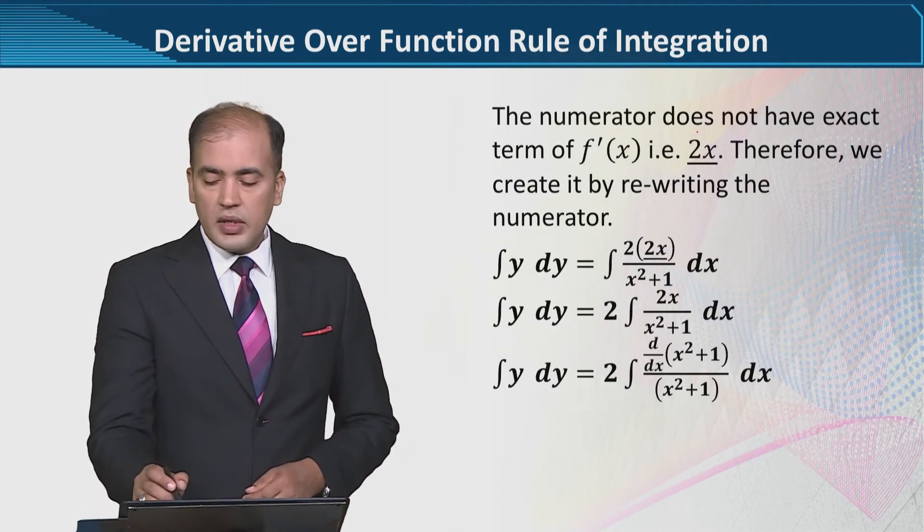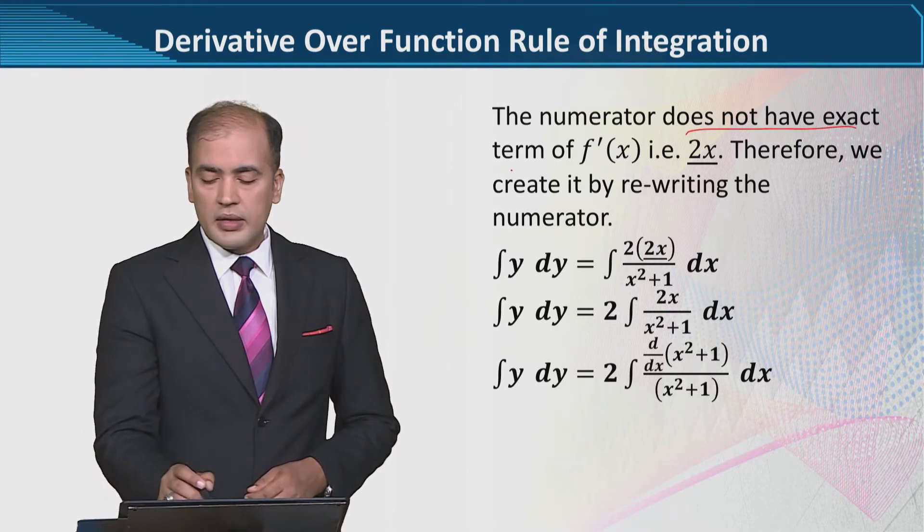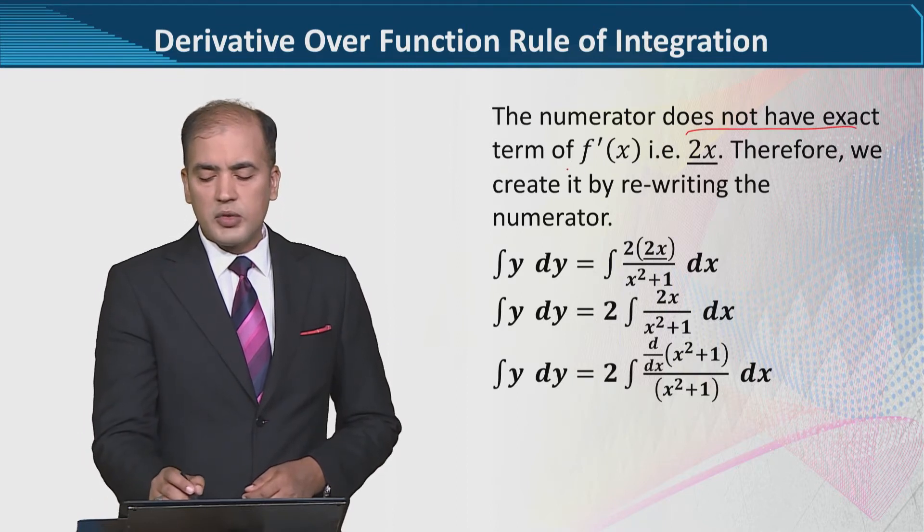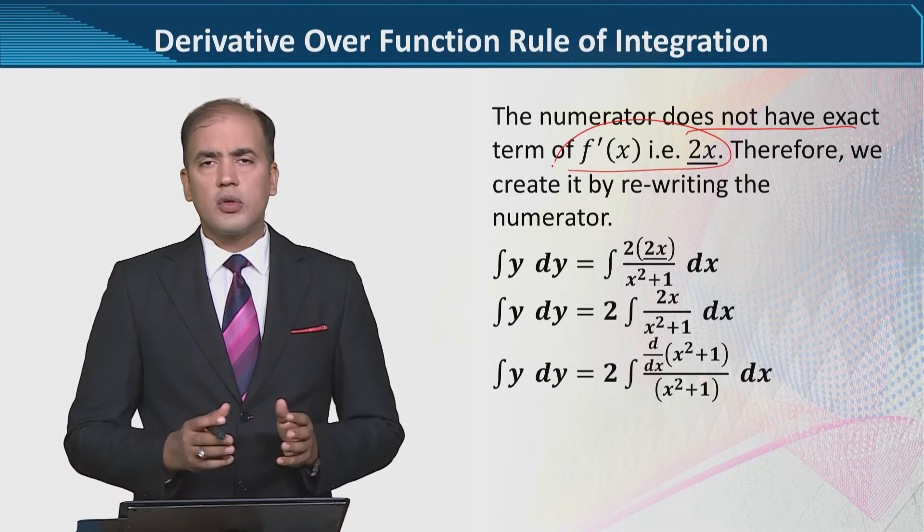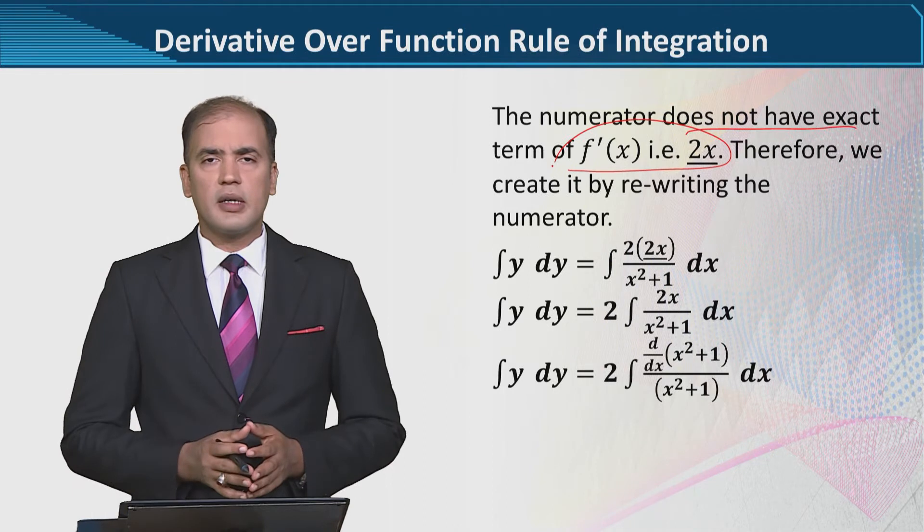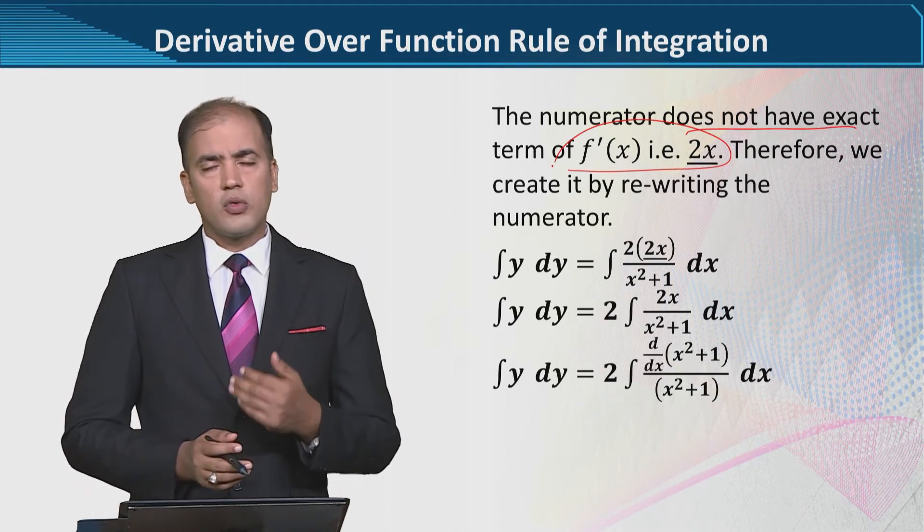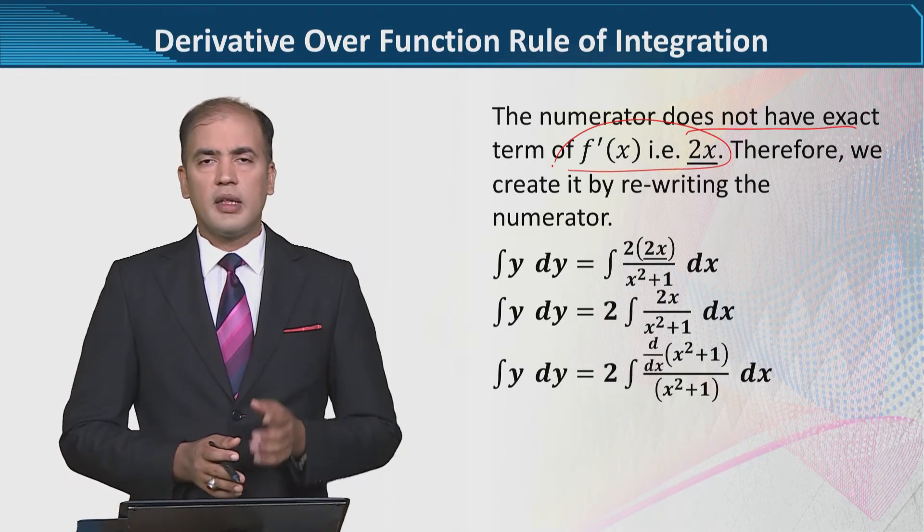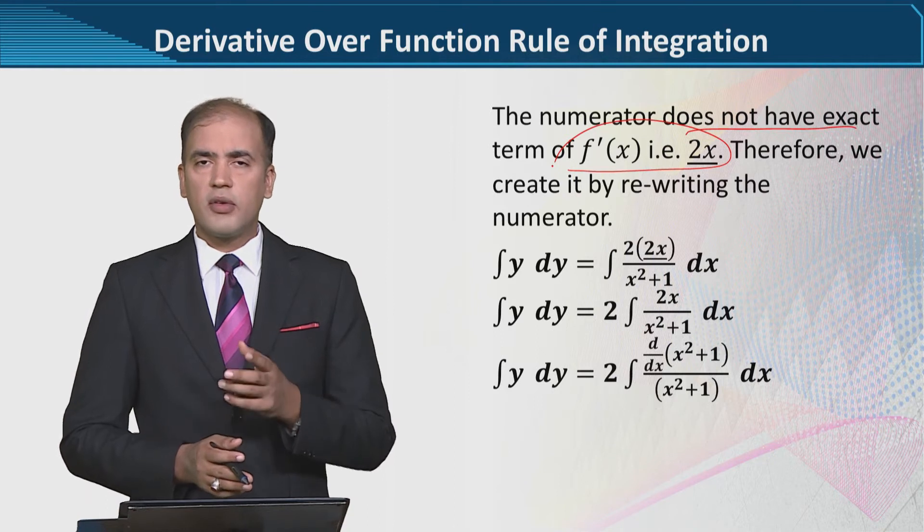Now the derivative does not have the exact term that we wanted—it should be 4x but we have 2x. So to make it 4, we will divide by 2 and multiply by 2, so that the 2 multiplies with the other 2 to become 4x.